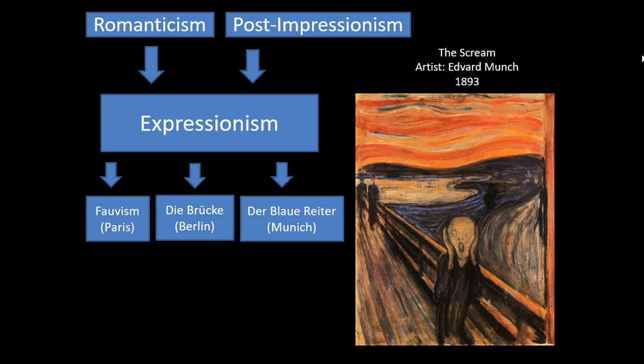Expressionism had an international appeal — a sort of pan-European art movement — and it was a particularly strong artistic force at the beginning of the 1900s because it depicted the artist's inner and personal vision with an emotional dimension. The two major centers of European Expressionism are France and Germany, and the three subsets — Fauvism, De Brucke, and Der Blaue Reiter — are what we're going to be looking at in this lecture. Let's start with Fauvism.